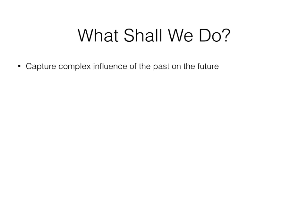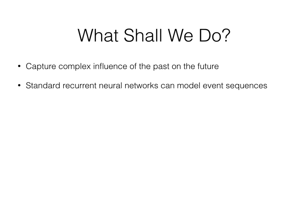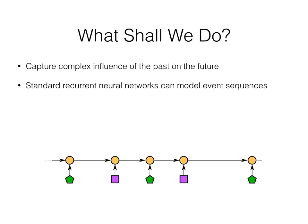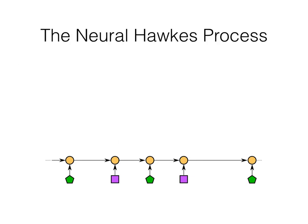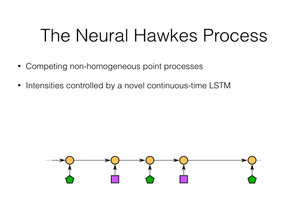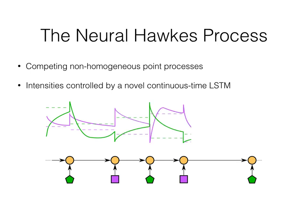What shall we do to capture this complex influence of the past on the future? Standard recurrent neural networks can model advanced patterns, but not the timing or the interaction with timing. So we came up with the Neural Hawkes Process. Competing non-homogeneous Poisson processes are used. Intensities are controlled by a novel continuous-time LSTM. The LSTM's hidden state is updated by each new event, but also evolves continuously between events, so the intensities keep changing.